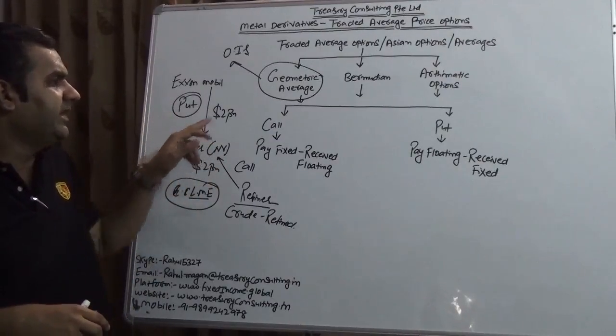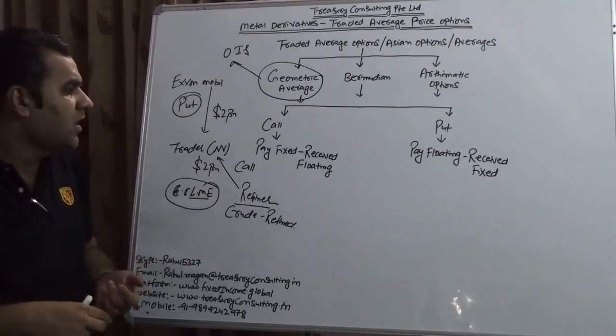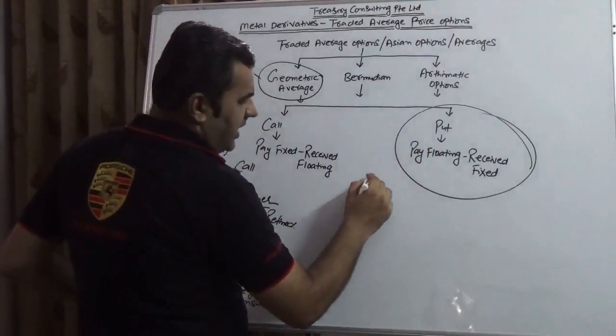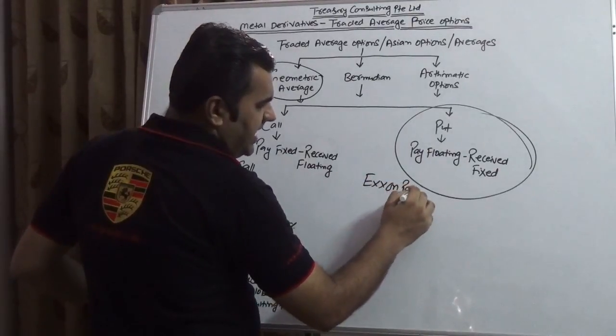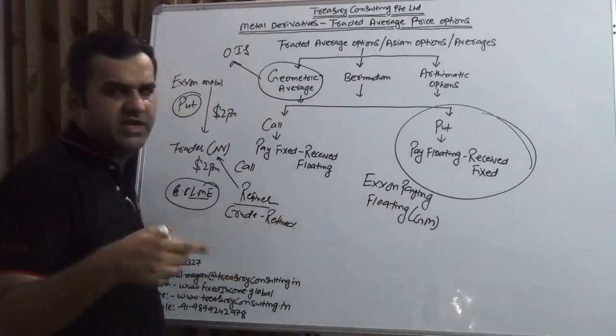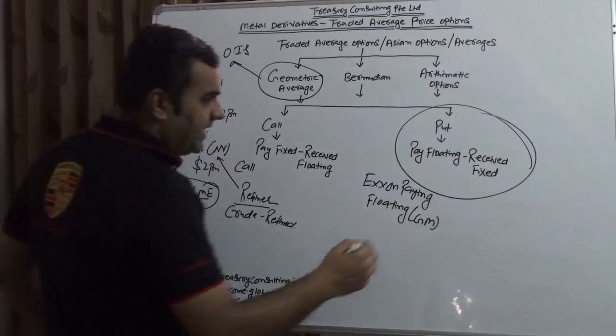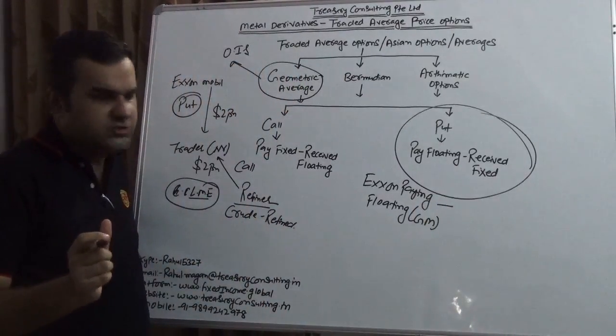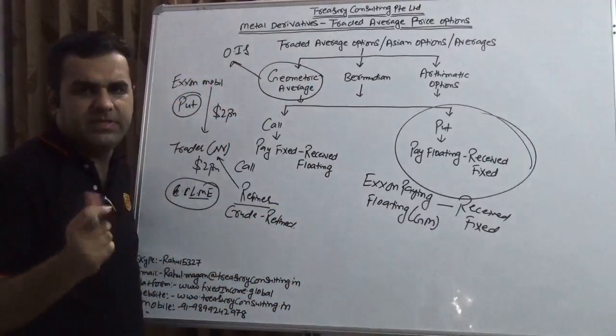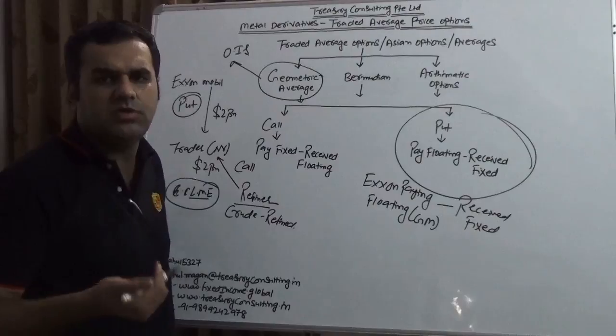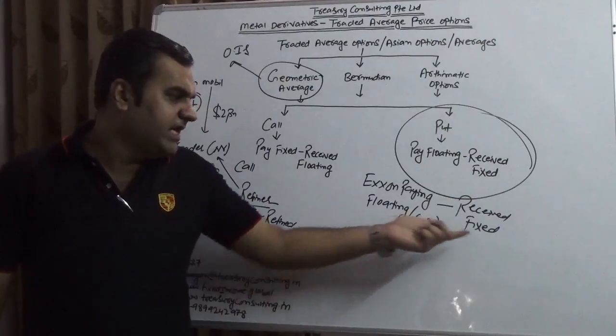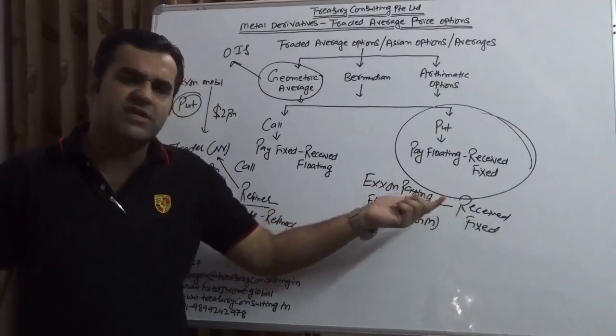ExxonMobil will go for geometric and the refiner will go for arithmetic. In the put option, which is ExxonMobil's call, ExxonMobil would be paying floating, which is geometric mean, because every day the closing would be different, so that would be floating minus they will agree to a rate, assuming it could be any rate, which is received fixed. If at the end of expiration things would come in their favor—for example, if this floating would turn out to be less than this—then they will exercise. If it is more than this, they would let it expire worthless, for which they are going to pay the premium.